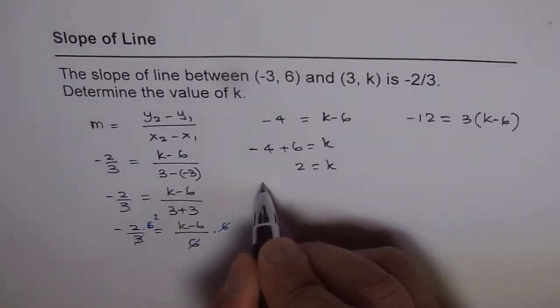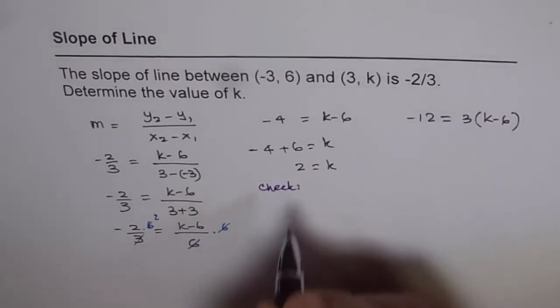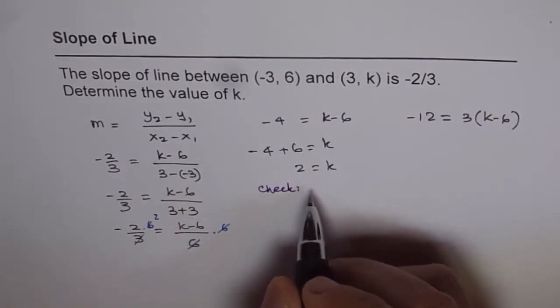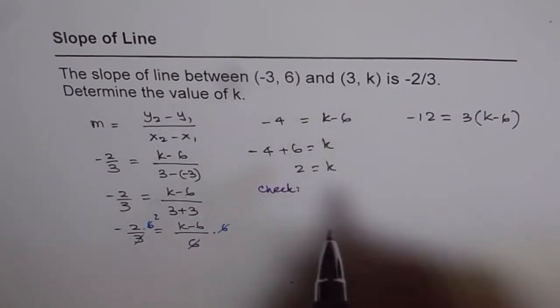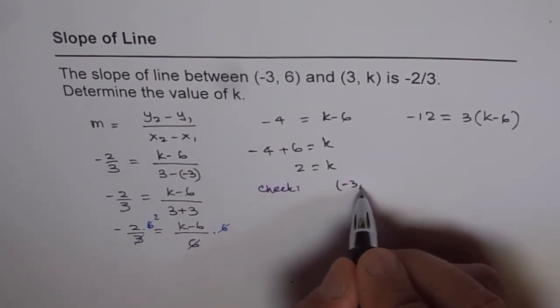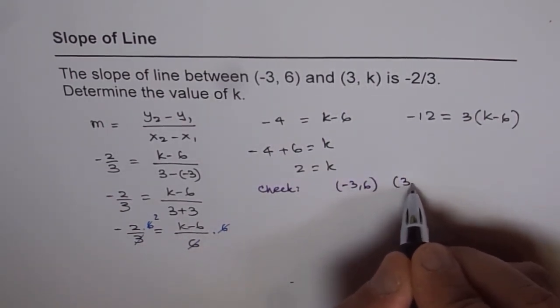It is not necessary to check the answer, but it is kind of better to check the answer. So we write 2 here. So the points for us are (-3, 6) and the other point is (3, 2).